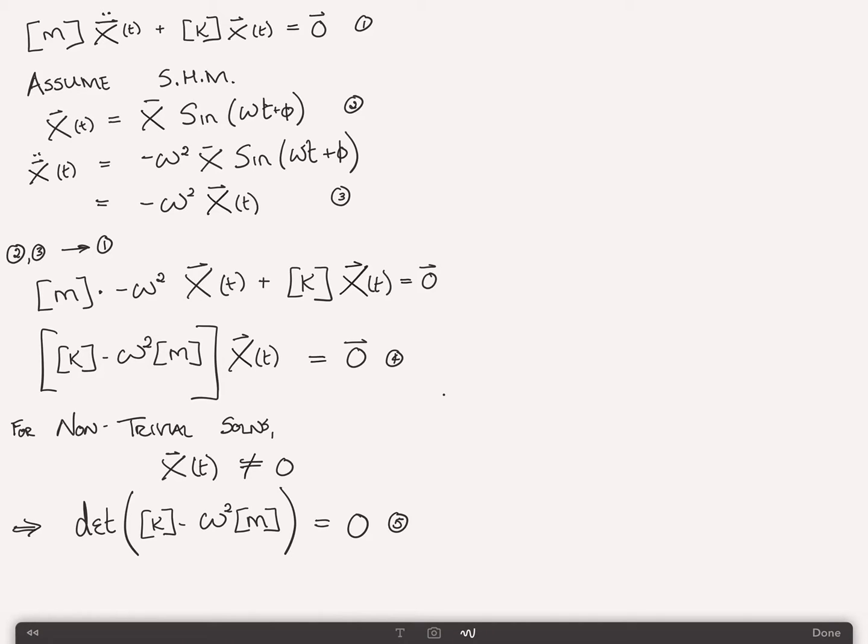Now, cast your mind back to your linear algebra classes. You might remember that assuming the determinant of k minus omega squared m is 0, what it means is that there is no unique solution for this. Why? Well, if there were a unique solution, it would simply be x equals 0. And another way to think of the determinant is almost like the magnitude of a matrix. So if the determinant is 0, you're actually multiplying, it's kind of like multiplying by 0.